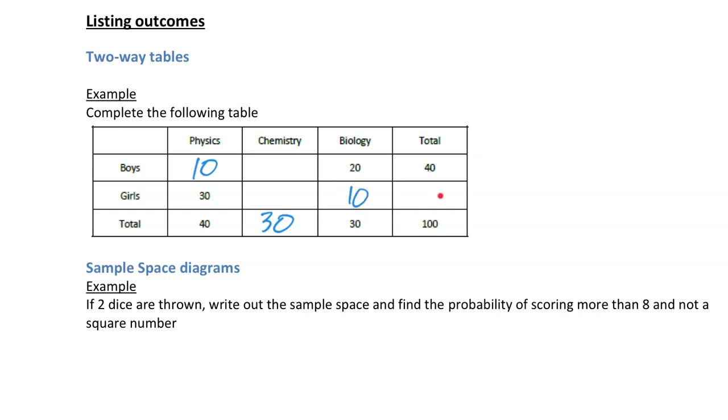And to get this one, 40 plus something gives you 100, so the missing number is going to be 60. Then we can work horizontally. We know the total for this row here is 60. So 30 plus 10 plus something gives you 60. So 30 plus 10 is 40, so the missing number must be 20. And to get this number in here, 10 plus the number plus 20 gives you 40, so the missing number must be 10. So you've got all of your numbers filled in your two-way table.